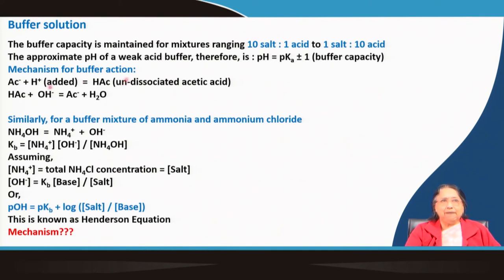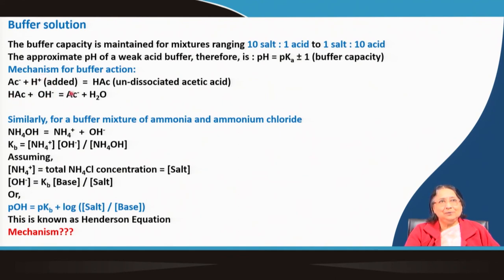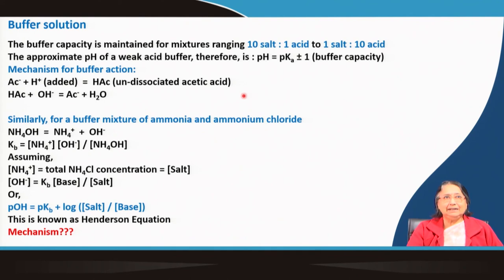The mechanism of buffer action for an acidic buffer: acetate ions are present in the medium. When H⁺ ions are added, they immediately combine with acetate ions to form undissociated acetic acid molecules. If a small amount of alkali (OH⁻) is added, it reacts with the acetic acid to form acetate ions and water. In this way, added H⁺ or OH⁻ is consumed and the pH of the medium remains almost constant — only a very small change is observed.